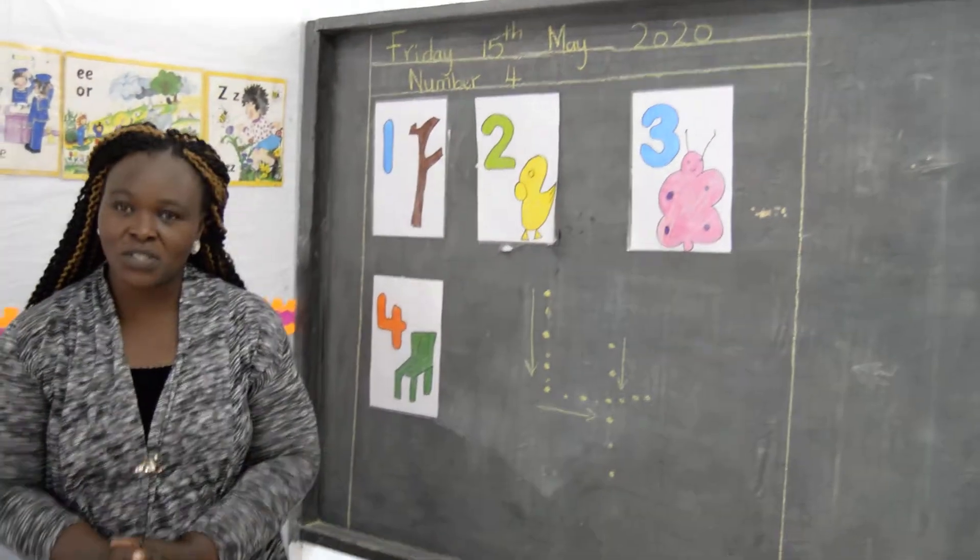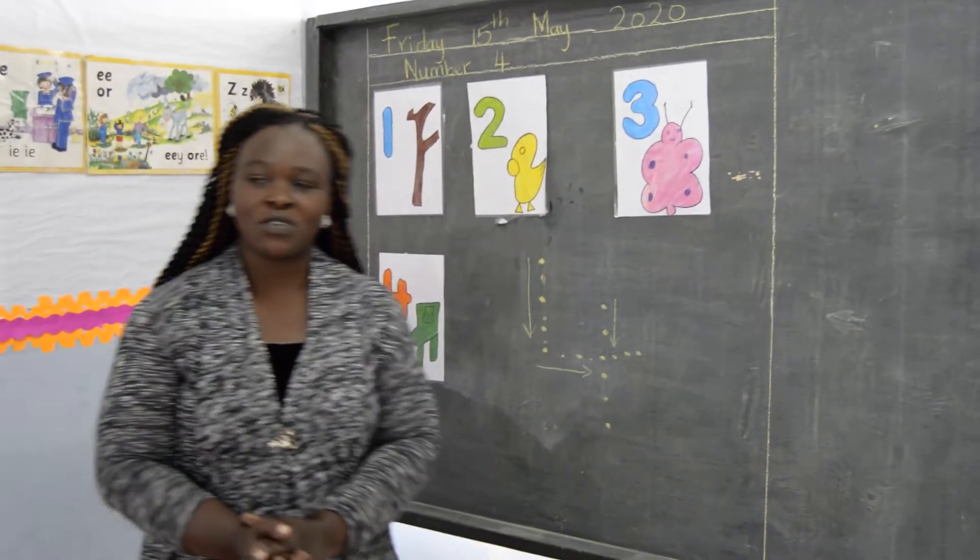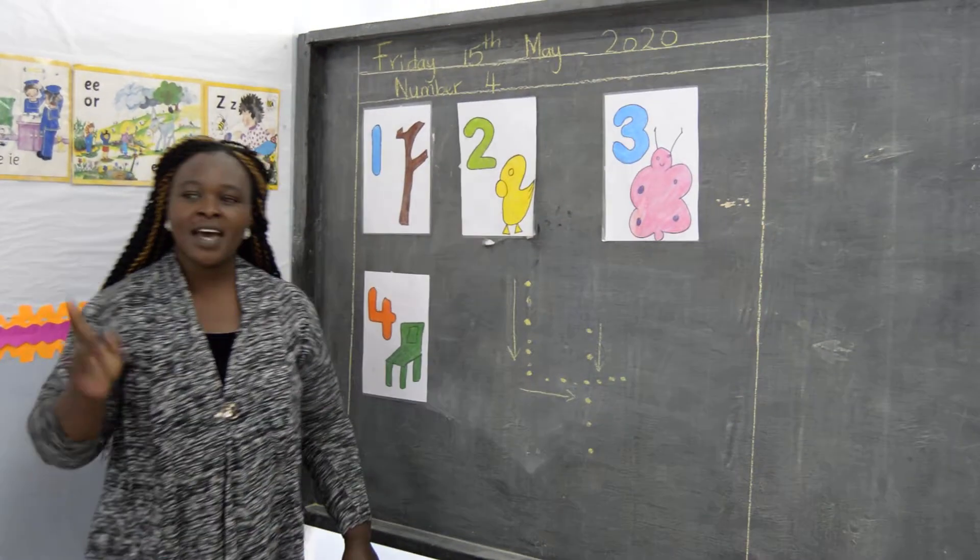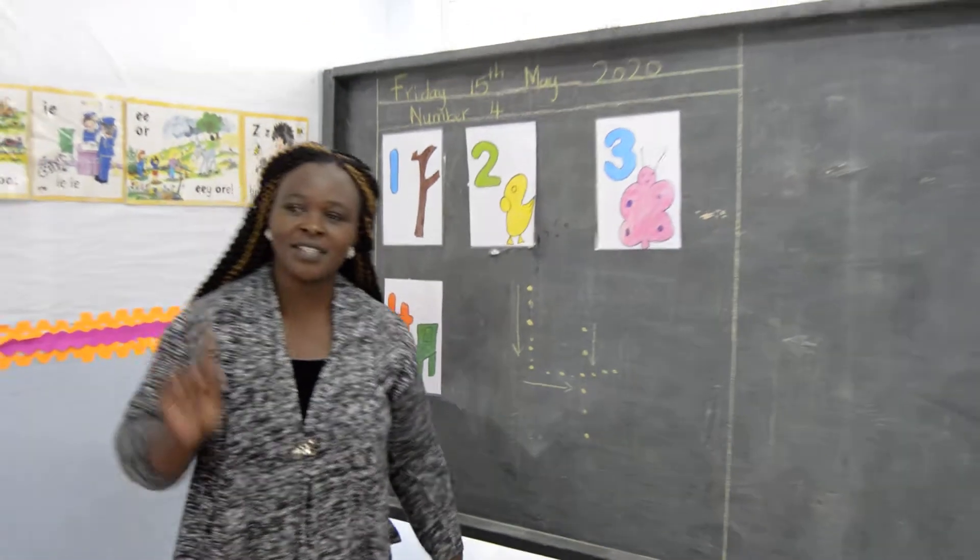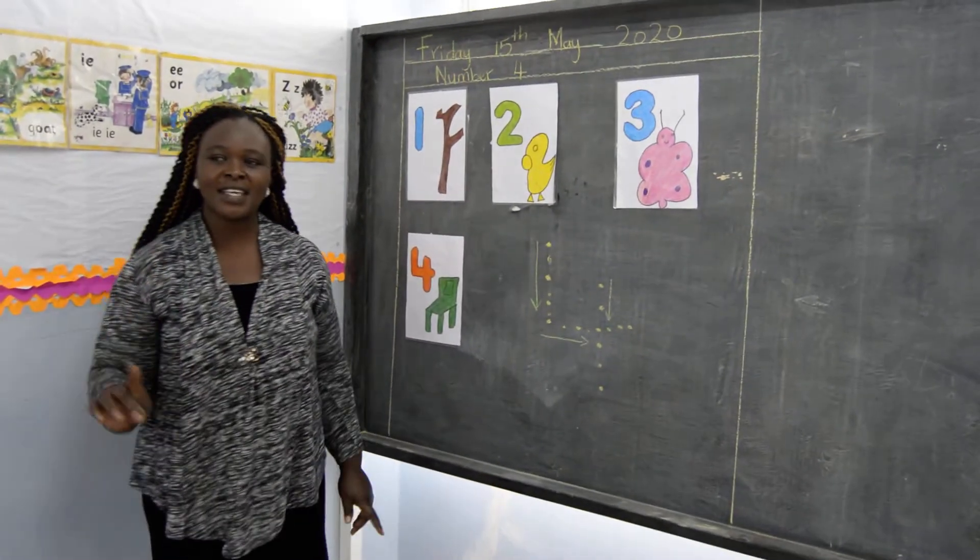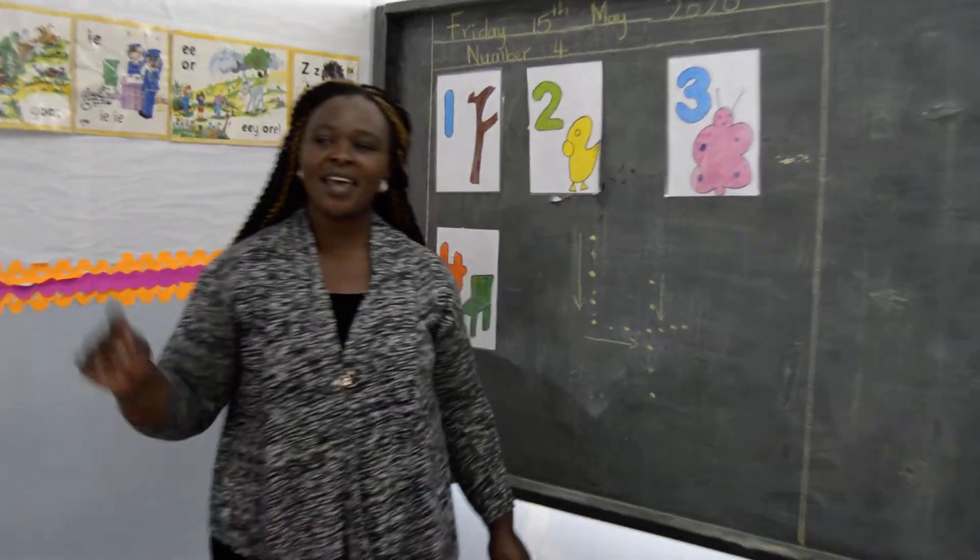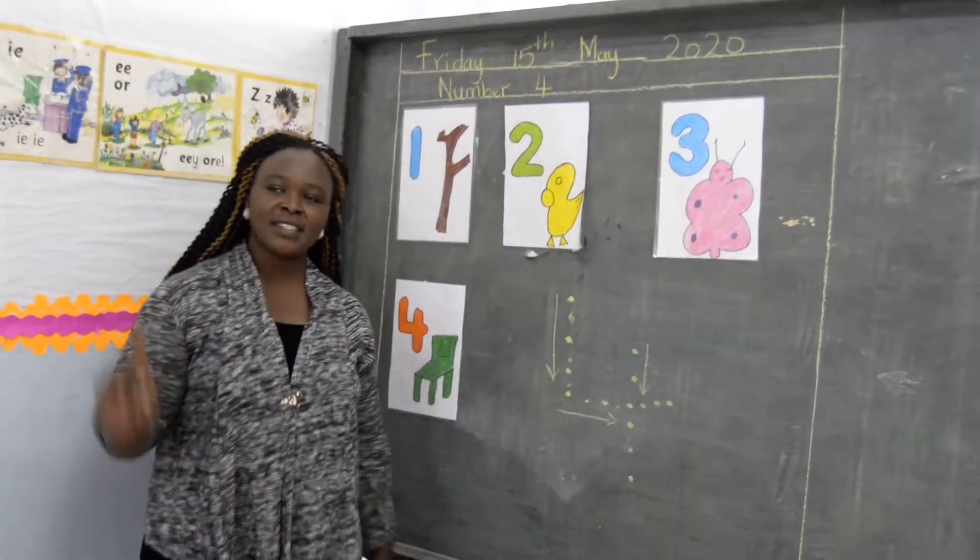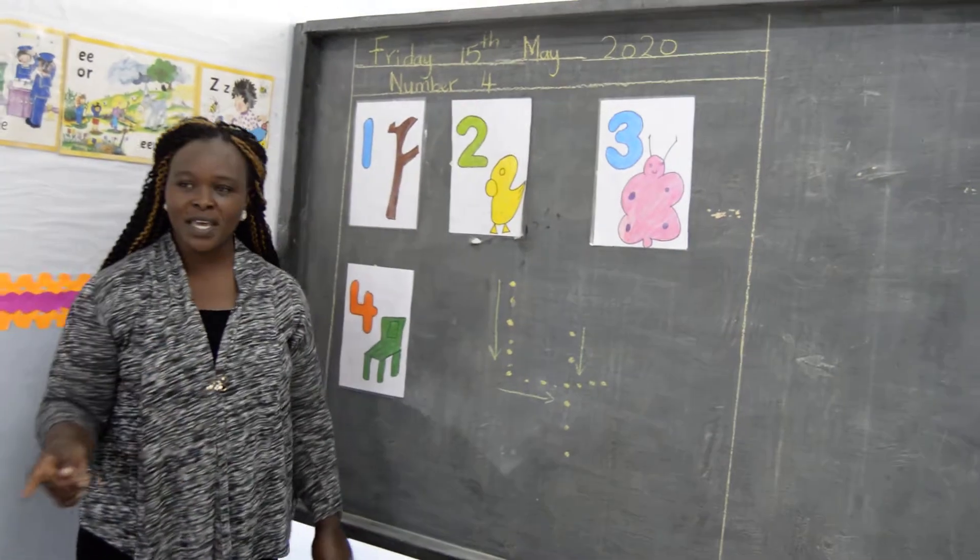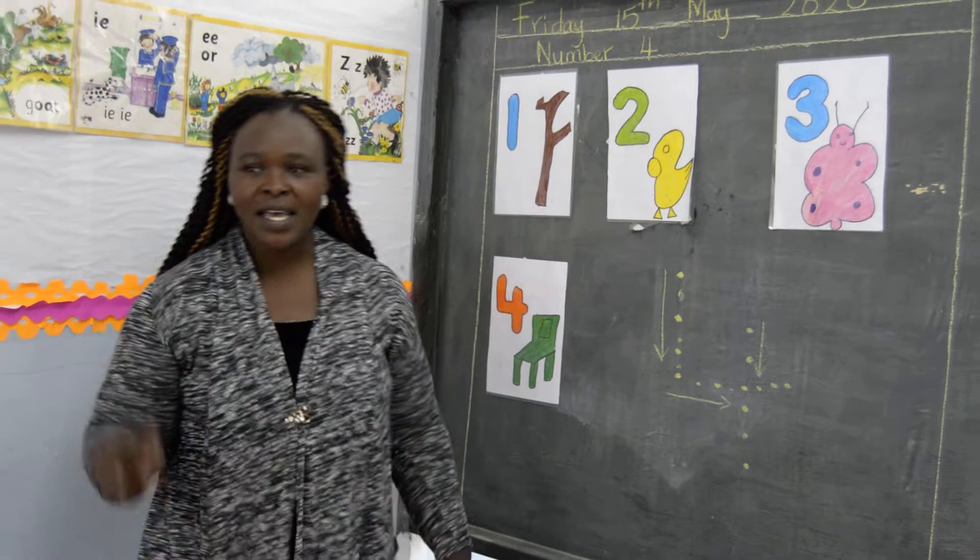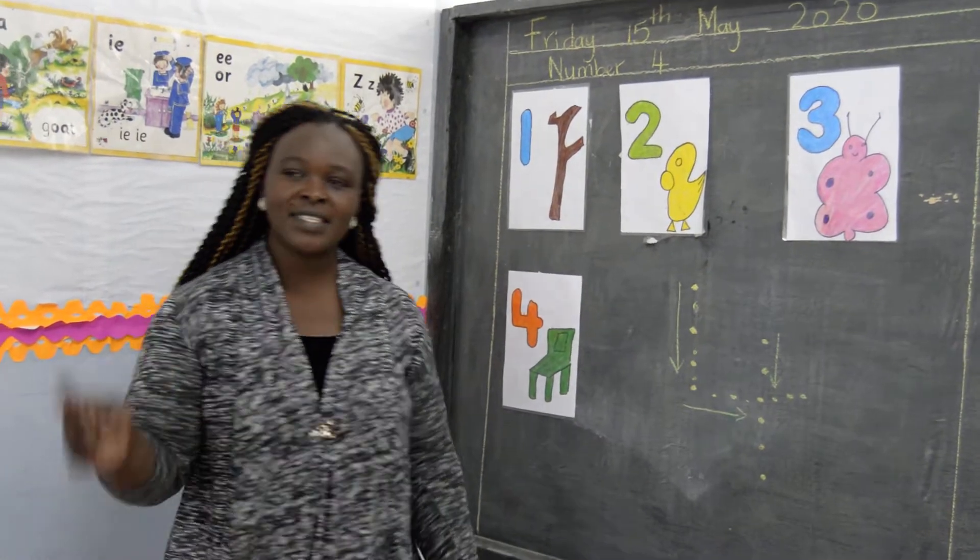Can you remember the song of the days of the week? Can we sing together? There are seven days, there are seven days, there are seven days in a week. There are seven days, there are seven days, there are seven days in a week. Sunday, Monday, Tuesday, Wednesday, Thursday, Friday, and Saturday.